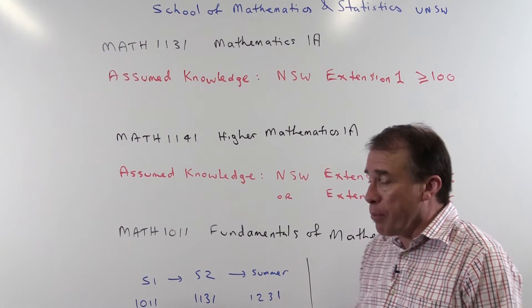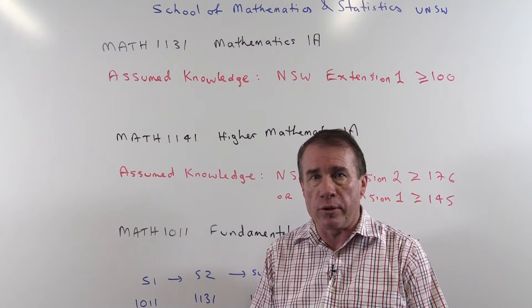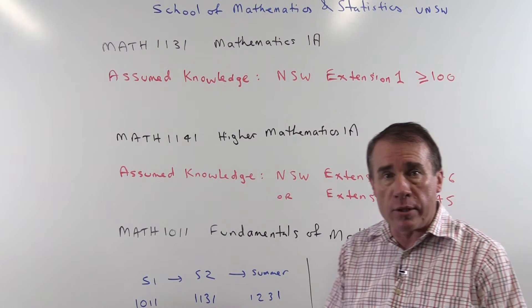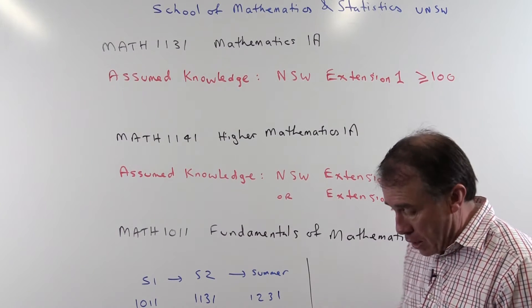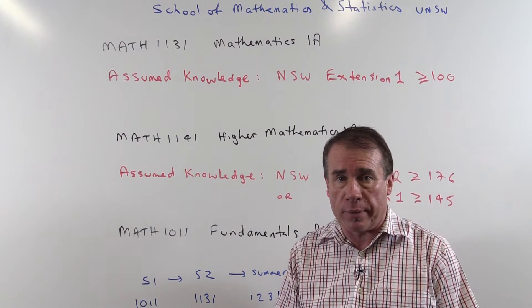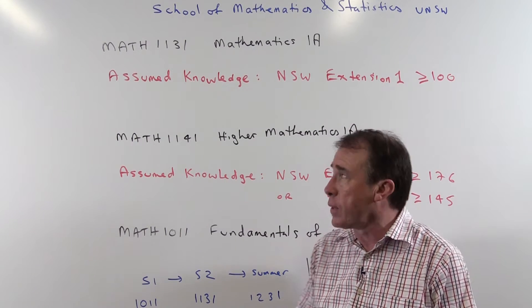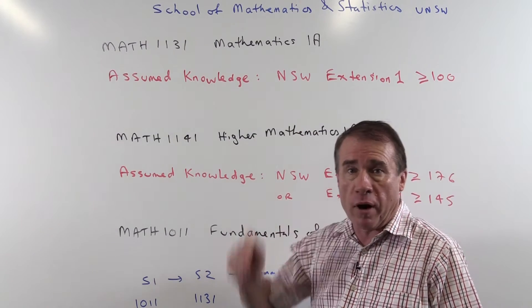It has two components. There's an algebra component and a calculus component to this course. The assumed knowledge for the course is New South Wales mathematics Extension 1 with a mark of at least 100. That's 100 out of 150. If you've done Extension 2 then that'll be fine as well.